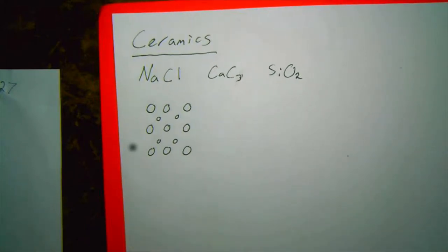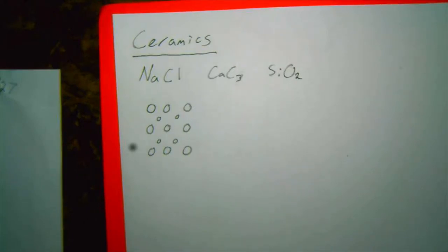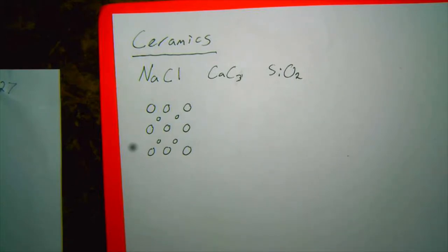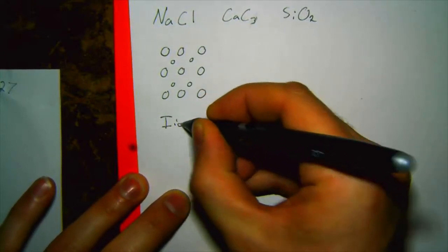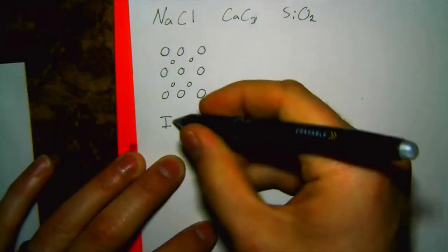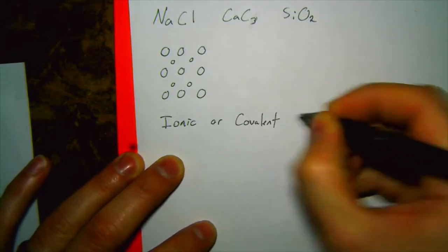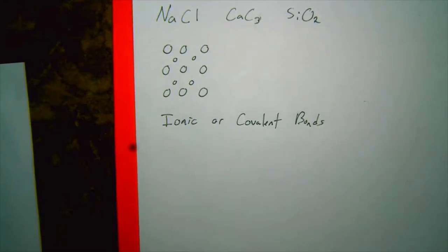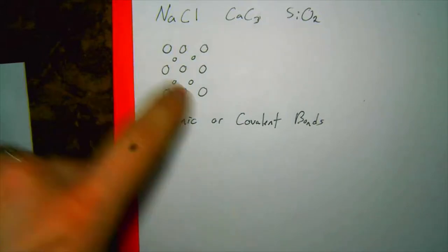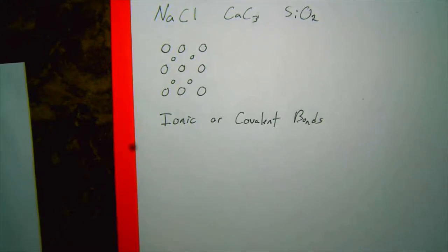Student question: salt is a ceramic? Where is the line between any material with multiple elements and being a ceramic? The key distinction is that ceramics have ionic or covalent bonding, in addition to having multiple elements. For metal alloys, you can have a whole bunch of metal ions metallically bonded together. In a ceramic, different elements are connected via ionic or covalent bonds, which are much, much stronger than metallic bonds.